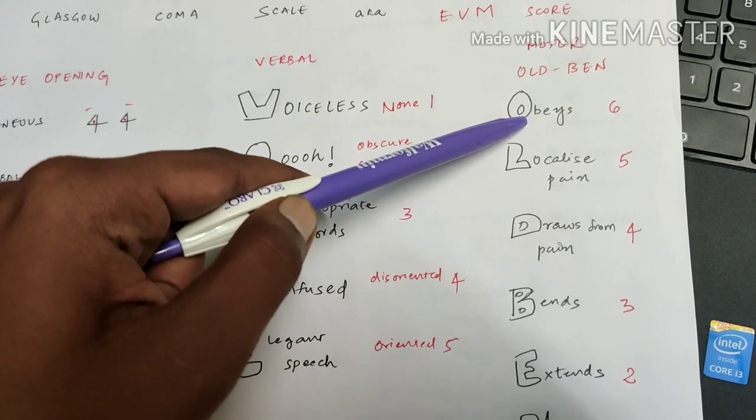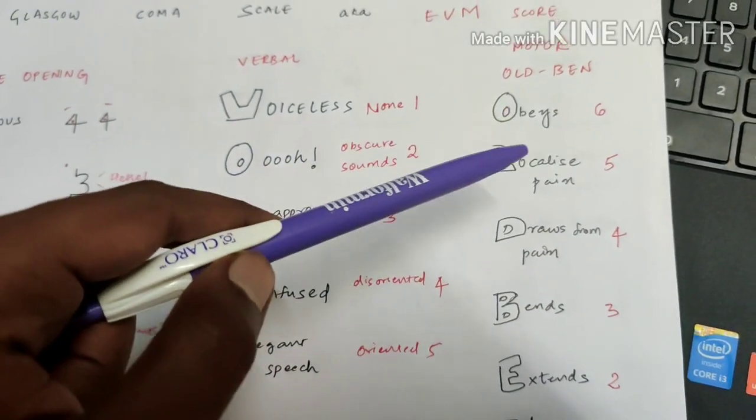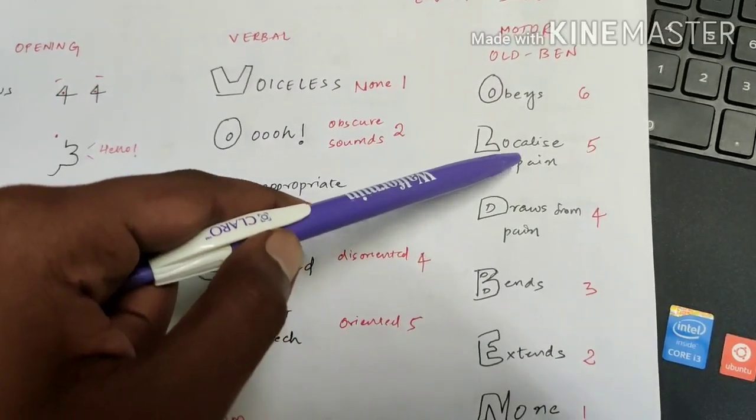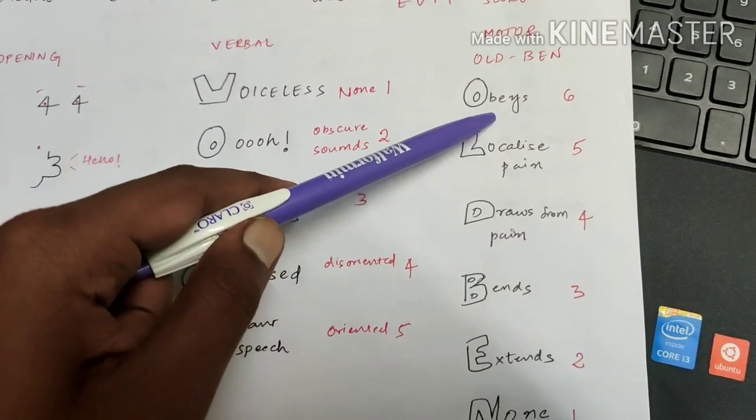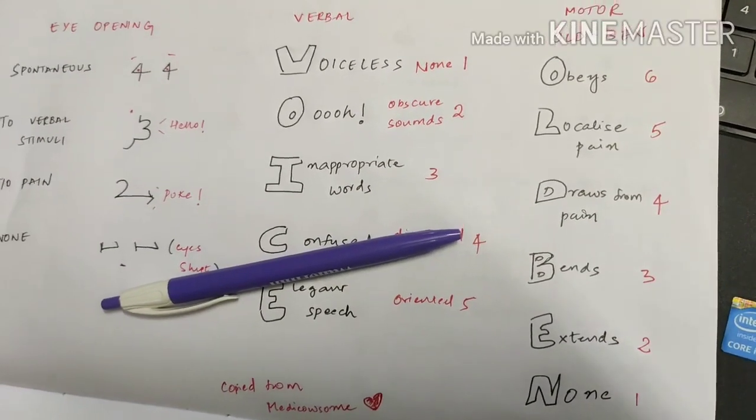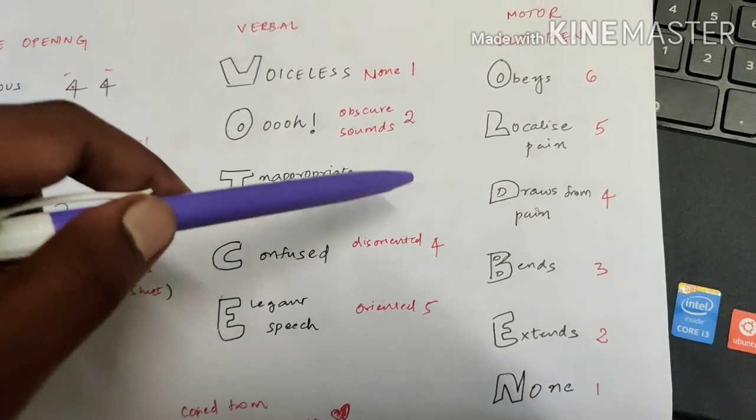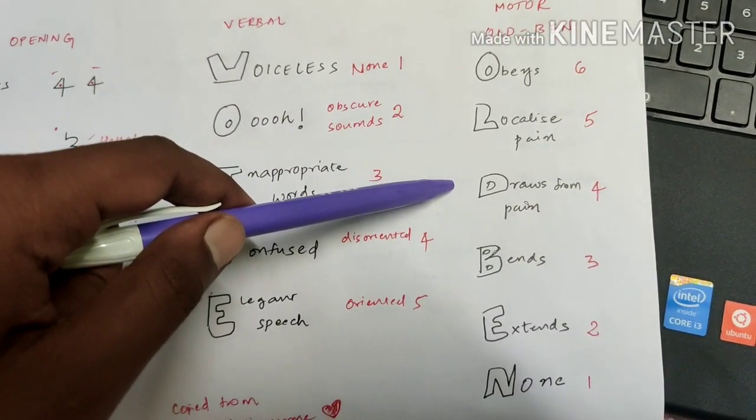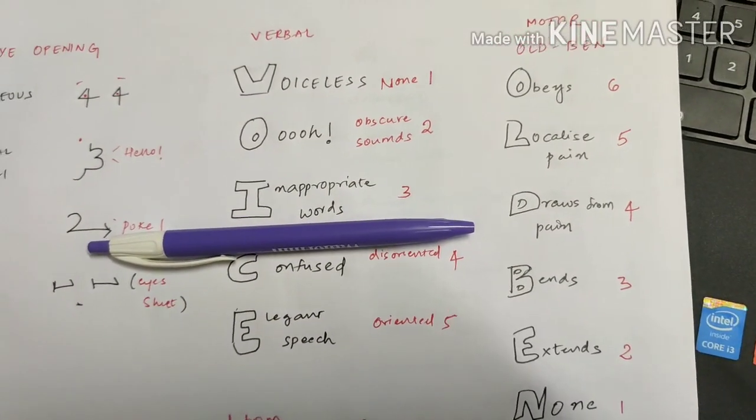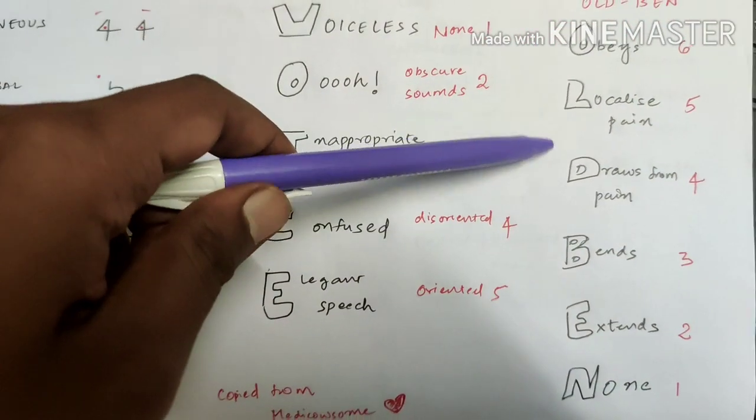O - obeys. He obeys whatever you do, whatever you tell, he'll do that. So the score will be six. Then L - he will localize the pain. He can localize the pain. He can't obey everything what you tell, but you pinch him, he'll localize it. He says it is pain, I'm paining here, I'm paining here like that. Then the score you will give him is five. Then he draws from the pain. He'll draw the leg or he'll draw the hand if you pinch him or you grab his hand tightly. He'll try it because of pain, then you will give the score four.